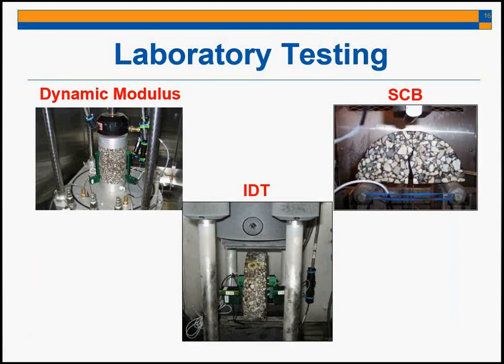From the testing, we want to understand how the mixes are performing and obtain material characterization for use in the model. The dynamic modulus test is performed when we have loose mixes and can create the appropriate sample size. When that is not the case, we core samples and perform the IDT. Either test allows us to determine the Prony series coefficients used in the finite element modeling. To check low-temperature performance, we use the SCB test.